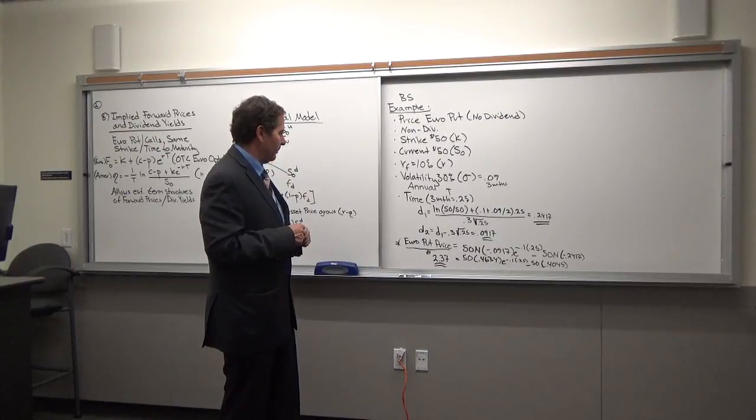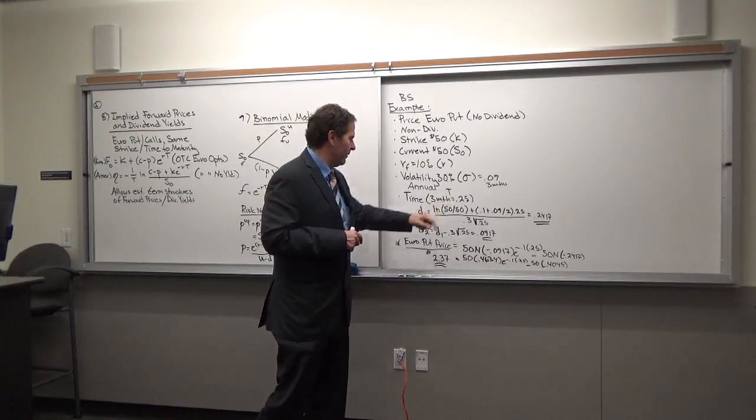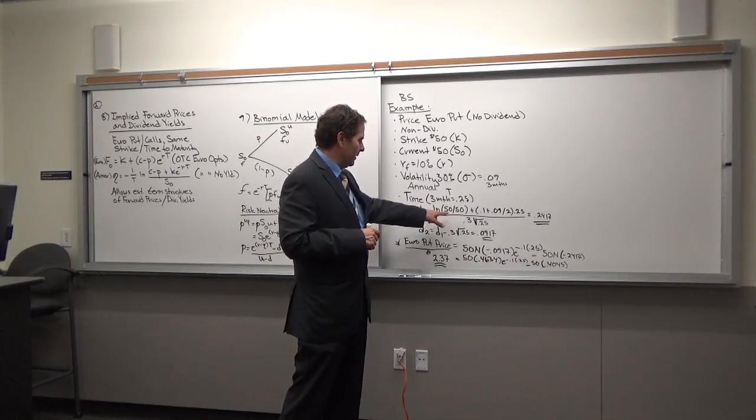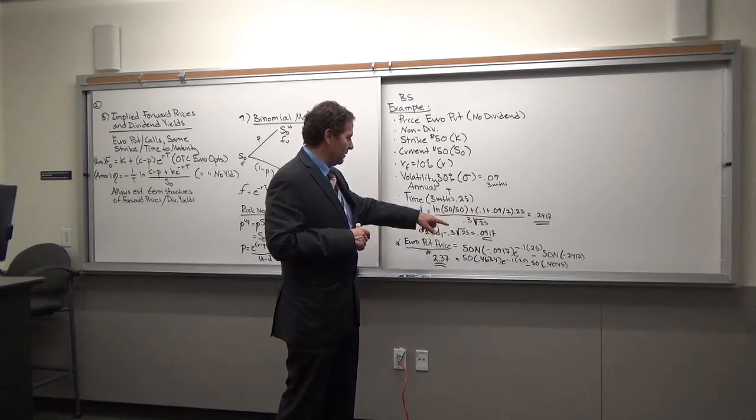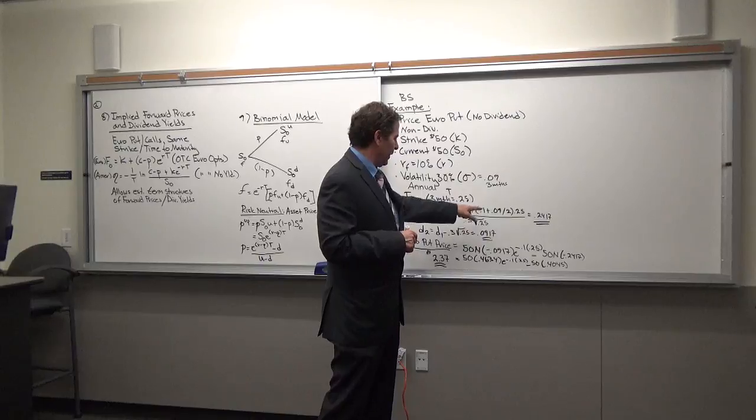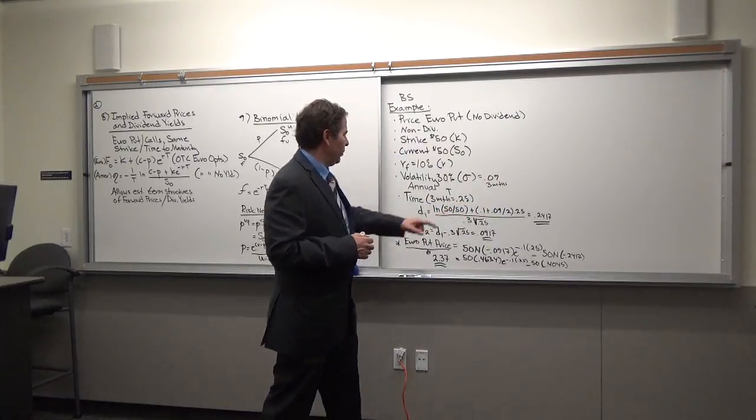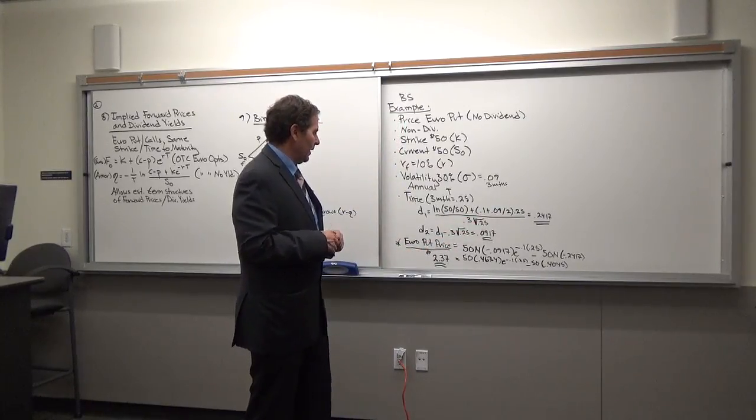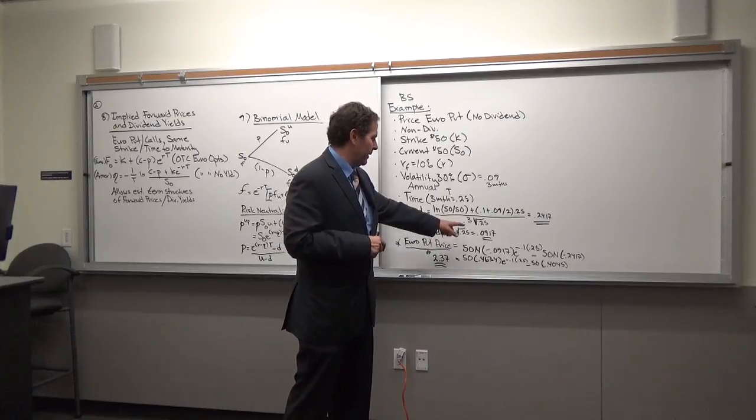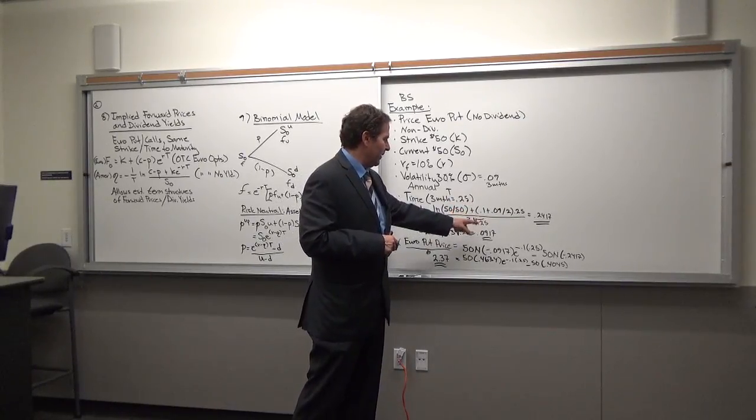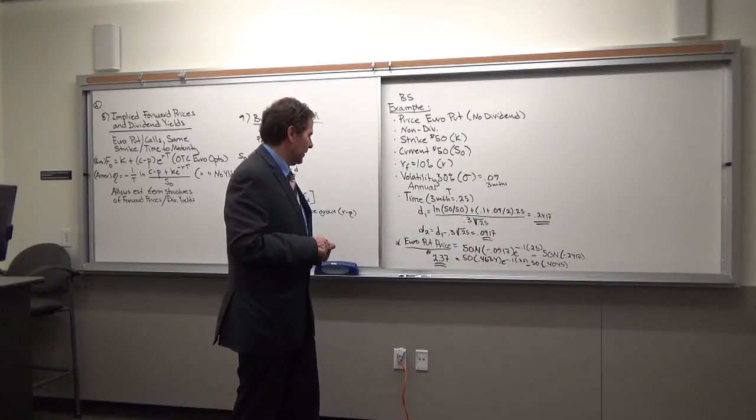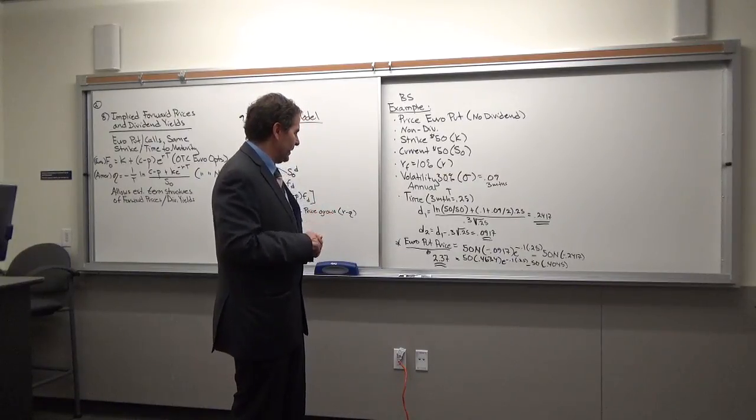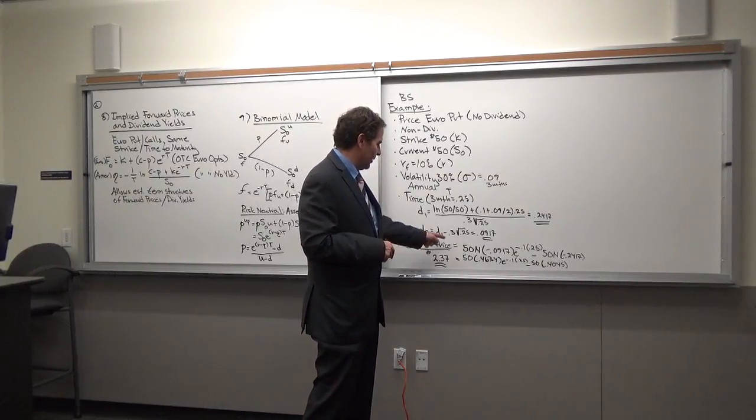The volatility is 30%, and again you're going to divide that by four to get the three months because this is a three-month time period, which is 0.25. And then to get d1, you're going to take the log of $50 divided by the $50 plus the risk-free rate plus the 0.09, which is the volatility divided by 2, times 0.25, divided by 0.3 multiplied by 0.25, which is the time, the square root of the time. And you're going to get d1 in this case, which is 0.2417. So to get d2, you're going to take d1 and subtract 0.3 to the square root of 0.25, and you're going to get 0.0917.